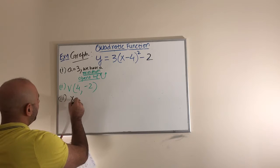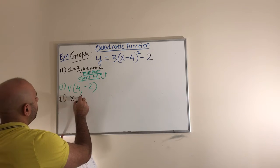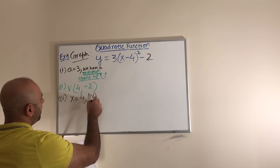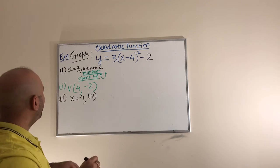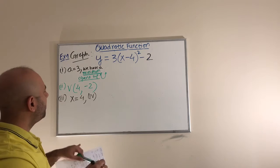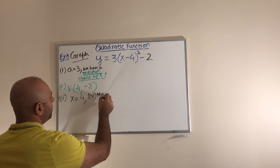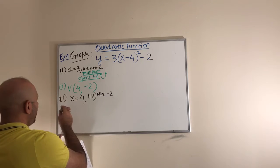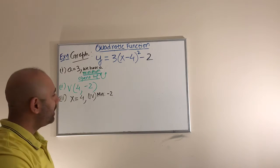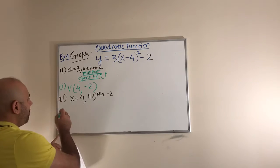And then let us also write down, well we don't really need that, we already know there's going to be a minimum. But the minimum is going to be what? The minimum is going to be negative 2.